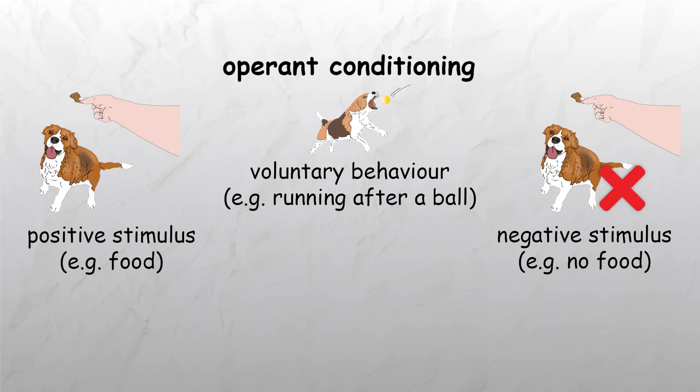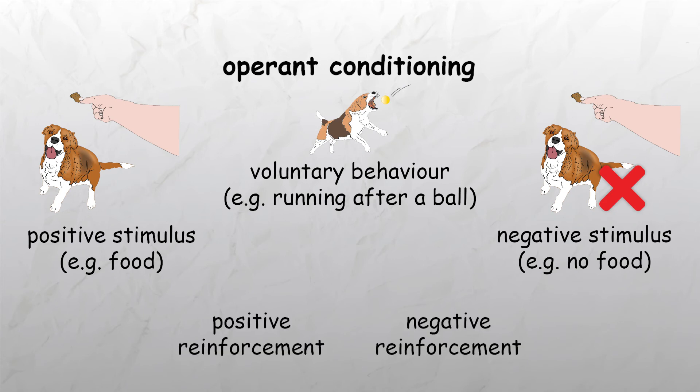Conversely, failure to manifest certain voluntary behaviors — for example, failure to retrieve a ball — resulting in a negative stimulus, for example lack of food, will result in negative reinforcement and correspondingly decrease the likelihood of that voluntary behavior from occurring again. Reinforcement forms an association between voluntary behavior and the consequence of that voluntary behavior.